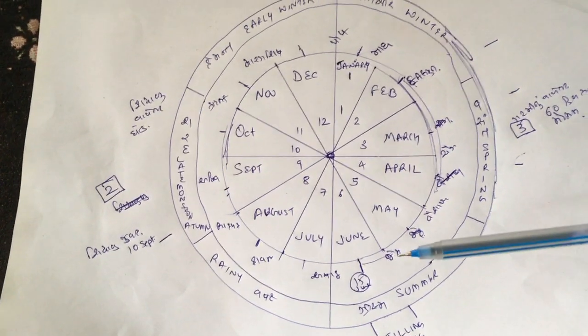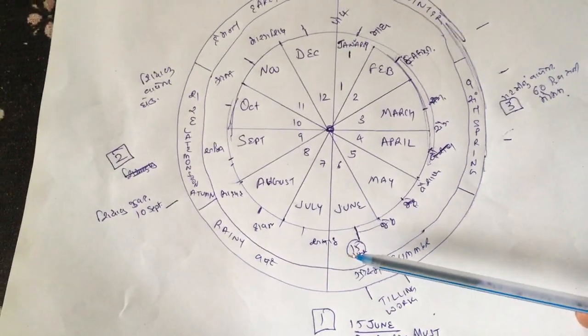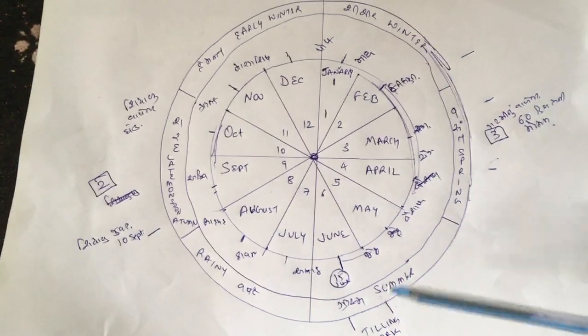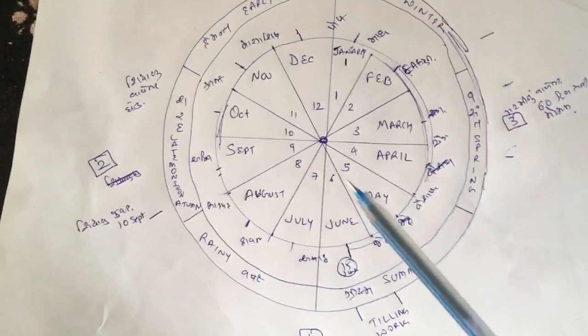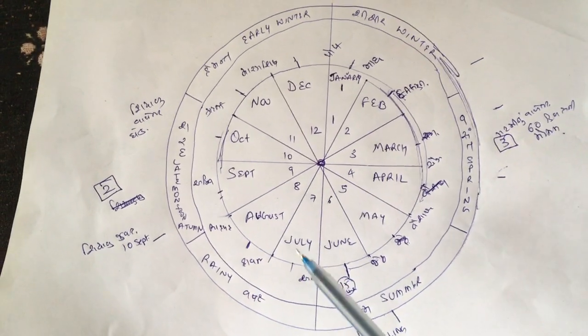This is the sowing pattern. If you miss the deadline of 15 June, you miss half the revenue of your field.